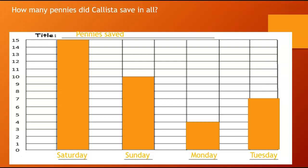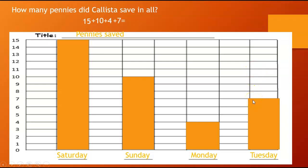So how many did she save on Saturday? We go to our graph. We see she saved 15. So let's write 15. And then we're going to add plus. How many did she save on Sunday? Looks like she saved 10. So let's add plus 10. On Monday, plus 4. And on Tuesday, plus 7 equals. Go ahead and solve that on your own. Did you get 36? If you did, give yourself a kiss on the brain.